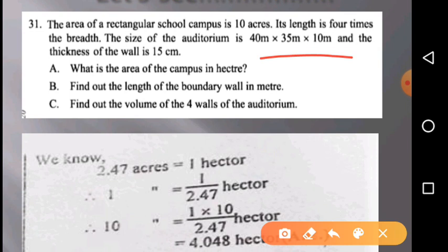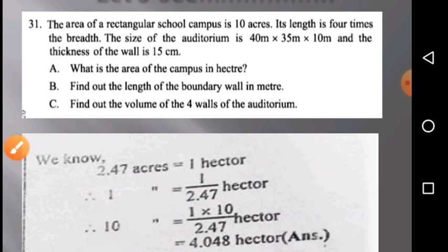What is the area of the campus in hectares? We know 2.47 acres equals one hectare, so one acre equals 1/2.47 hectare. Therefore, 10 acres equals 10 × 1/2.47. After calculating, we will get 4.048 hectares. So the required area of the campus will be 4.048 hectares.